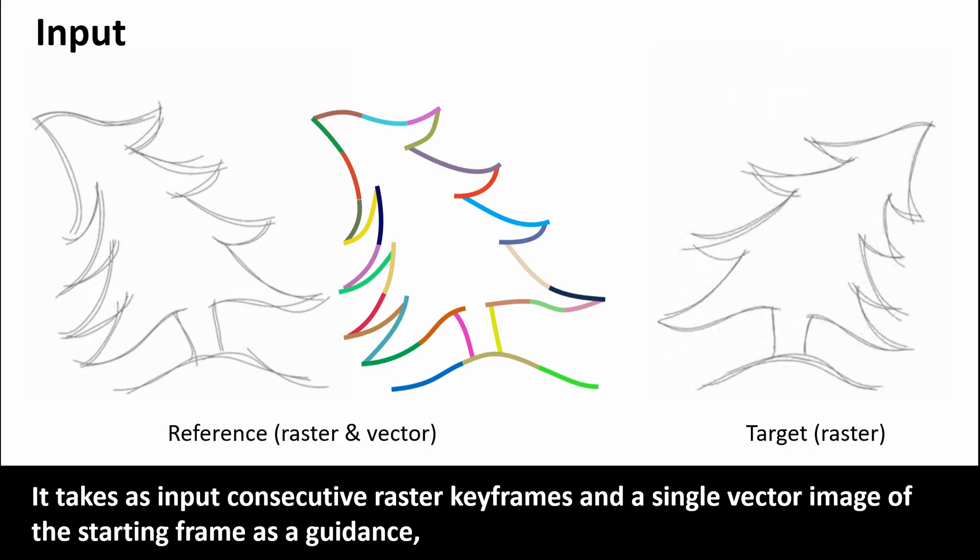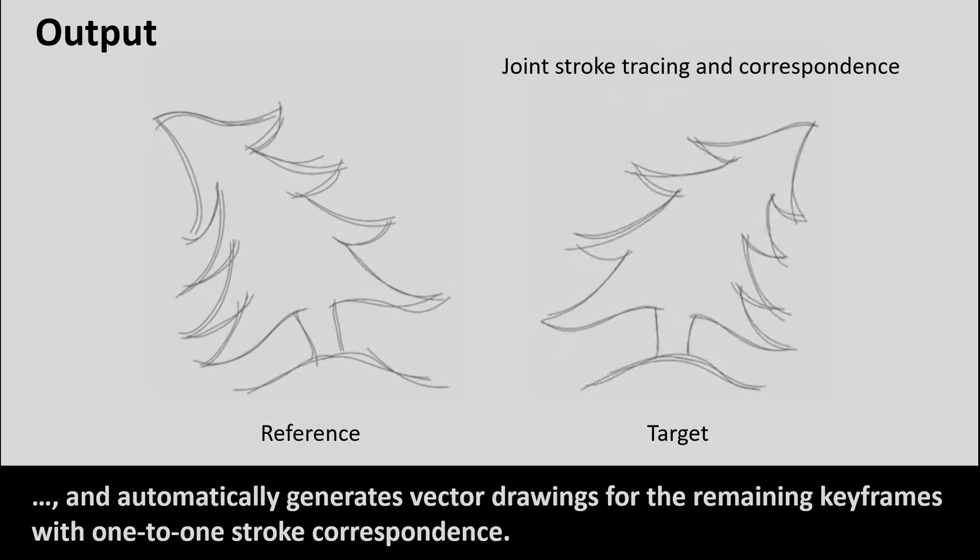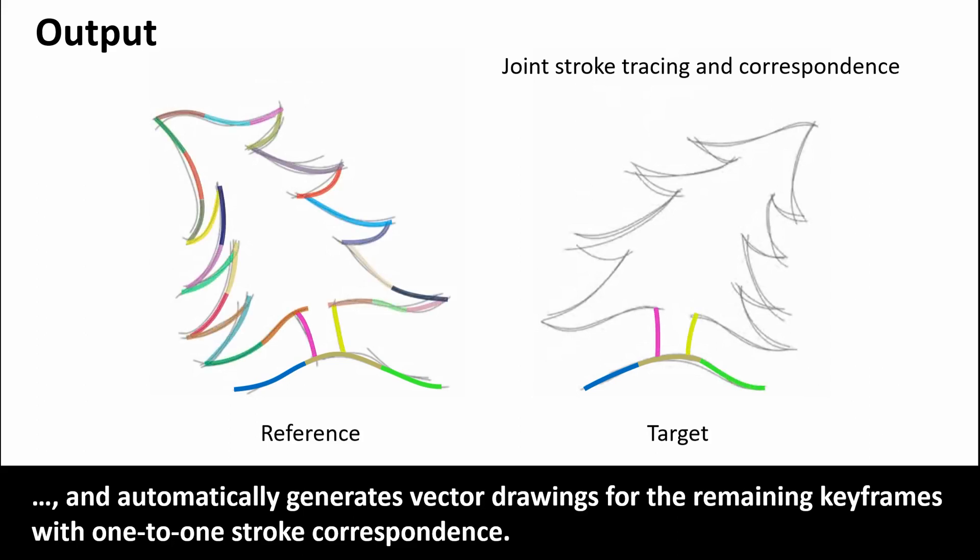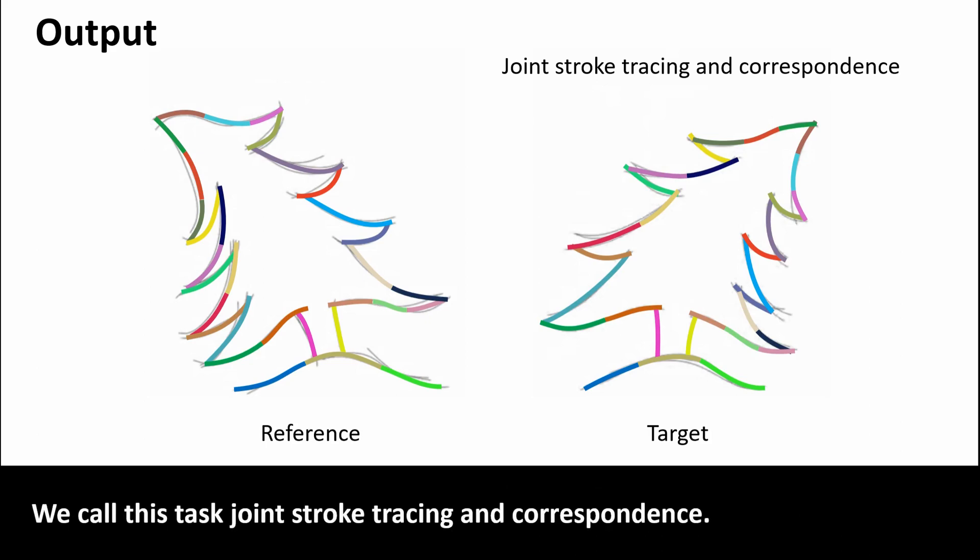It takes as input consecutive raster keyframes and a single vector image of the starting frame as guidance, and automatically generates vector drawings for the remaining keyframes with one-to-one stroke correspondence. We call this task joint stroke tracing and correspondence.